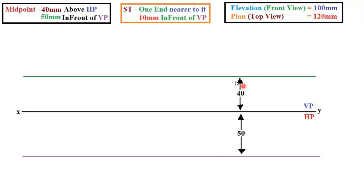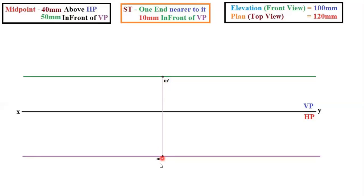I have just mentioned dimensions, but only after completion of your diagram should you show dimensions — in the beginning there is no need. For your understanding I have just marked and shown. You can approximately keep any point on this line. Since it is the midpoint, keep the point at the center, name it M dash. M dash and M should lie on the same vertical line. Mark a point below and name it M. These midpoints M dash and M will be lying on the same line.